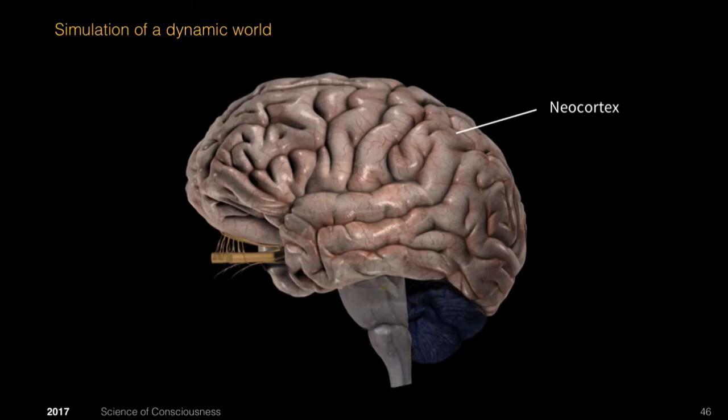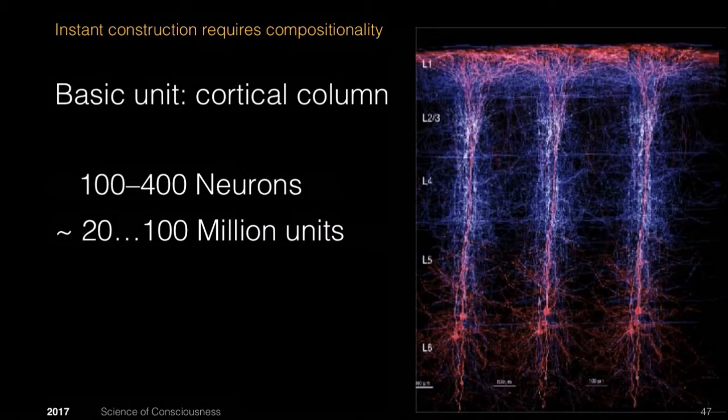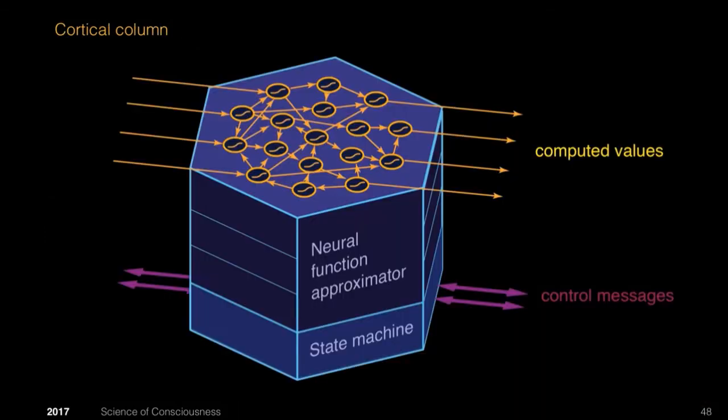So this is what the neocortex is doing—it's simulating a dynamic world. At the moment, we don't have all the elements for that in place in our machine learning models. I think the basic unit is probably not a neuron because it needs to be compositional. The basic unit is probably a cortical column. We have something in the order of 100 million of those. Each of them is probably a state machine made from something like 100 to 400 neurons, which has a functional approximator and combines it to different learning modes in different ways.